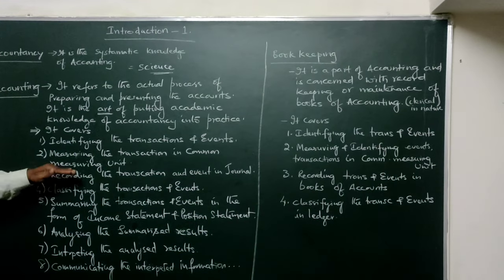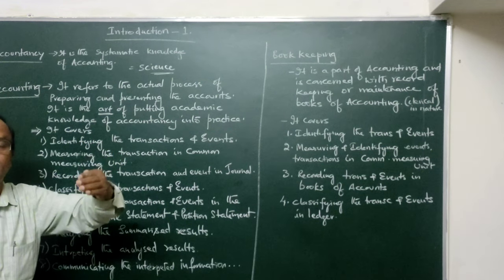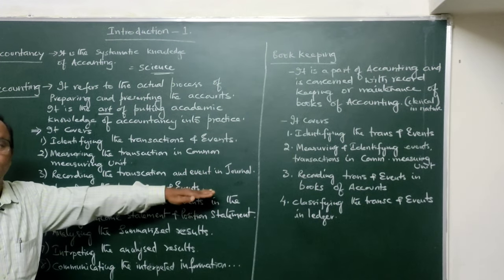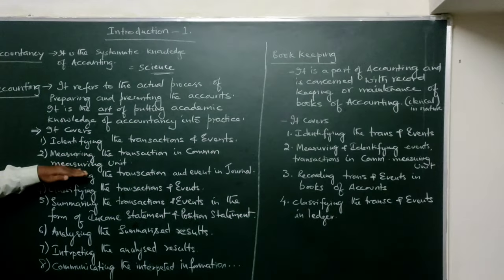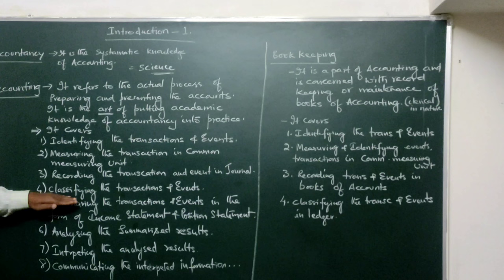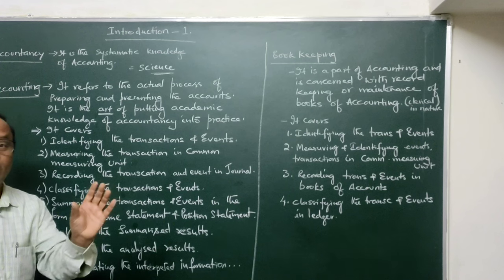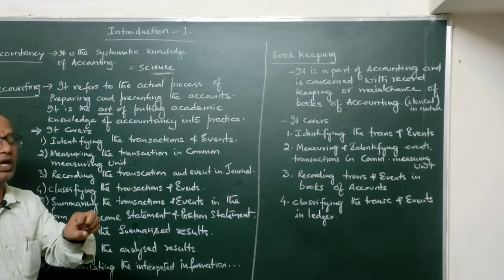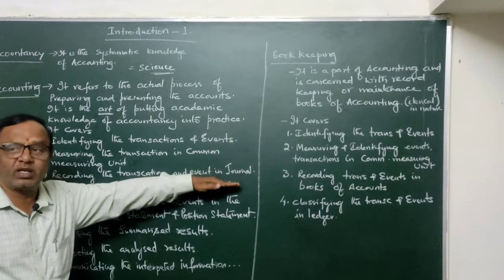After this topic, we will be learning accounting terminology, where you will know each term such as what is a transaction, what is a journal, what is a ledger. The journal is the first book maintained in the books of account, and all business transactions which are identified and measured in terms of the common measuring unit will be recorded there. The next aspect is classifying the transactions and events.